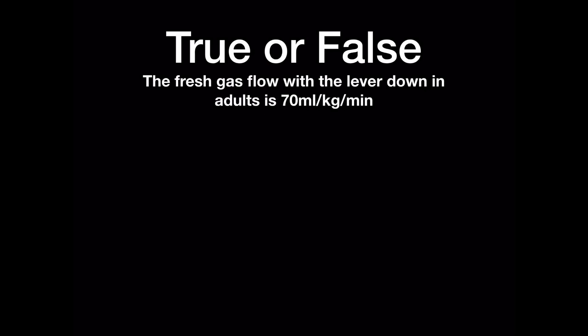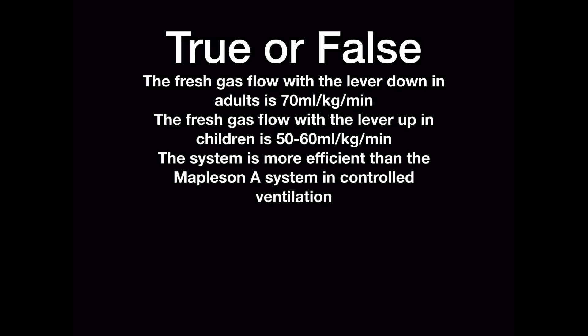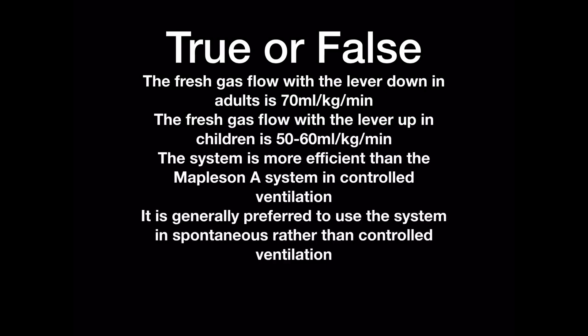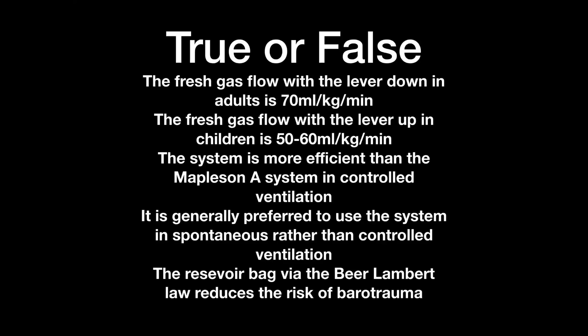True or false? The fresh gas flow with the lever down in adults is 70 mL per kilogram per minute. The fresh gas flow with the lever up in children is 50–60 mL per kilogram per minute. The system is more efficient than the Mapleson A system in controlled ventilation. It is generally preferred to use the system for spontaneous rather than controlled ventilation. The reservoir bag, via the principle of Laplace's law, reduces the risk of barotrauma to the patient. Thanks for listening — hope you enjoyed this.